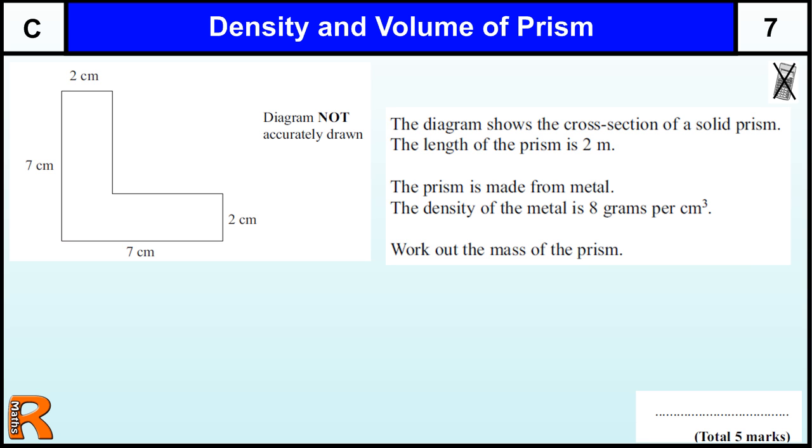Here we have a question on the density and volume of a prism. It's the last question on GCSE foundation paper, so it's a grade C question, and it's worth five marks, so it's quite involved. Do have a go at this question. Pause the video now if you haven't tried it already.